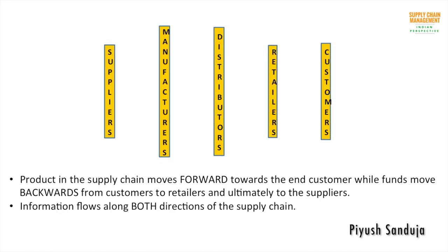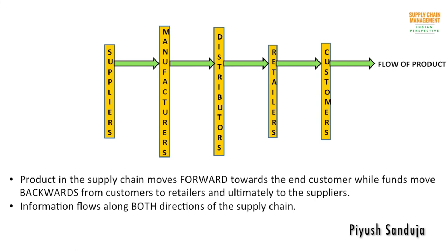Here we can see the five stages involved in a supply chain from customers to suppliers. For the flow of products: raw materials move from suppliers to manufacturers, so the flow of product is towards the manufacturer as shown by the light green arrow. Similarly, finished goods move from manufacturer to distributor, then from distributor to retailer for replenishment, and finally the retailer sells the product to the customer. Hence the flow of product happens in this direction — from supplier to customer.